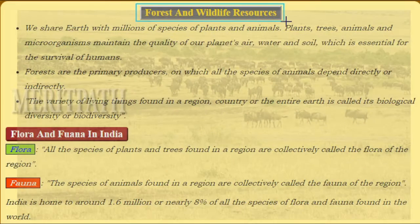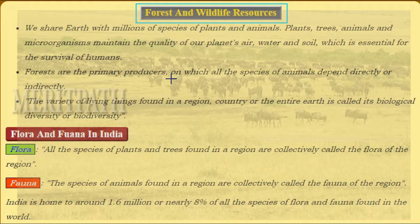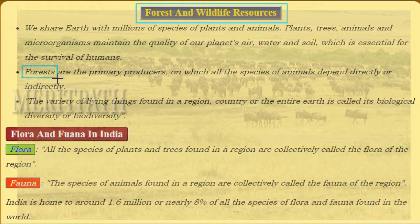Forest and wildlife resources: on earth we have millions of species of plants and animals. Trees, animals, and microorganisms maintain the quality of a planet's air, water, and soil, which is essential for the survival of humans. Forests are the primary producers on which all species of animals depend directly or indirectly.